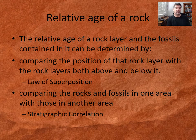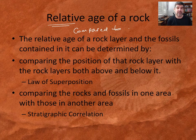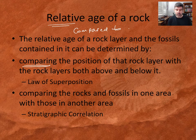So firstly, if we look at the relative age of the rock — 'relative' means compared to something. So when we're looking at relative ages, we're comparing them to something. When we look at the relative age of a particular rock layer and the fossils contained within it, we can do that by comparing the position of the rock layer with the rocks above and below it.